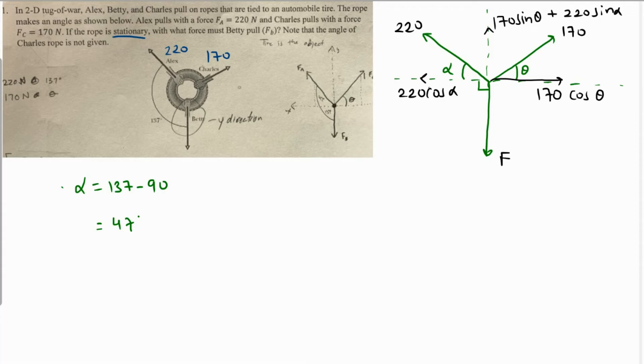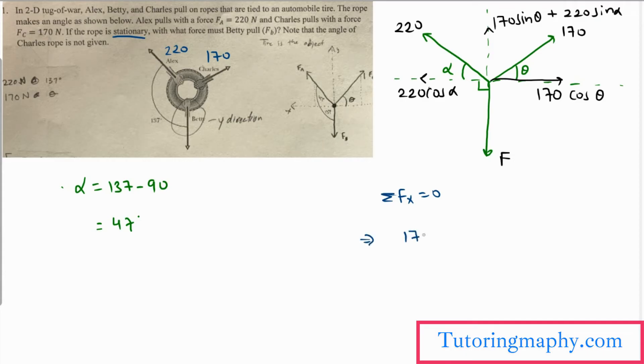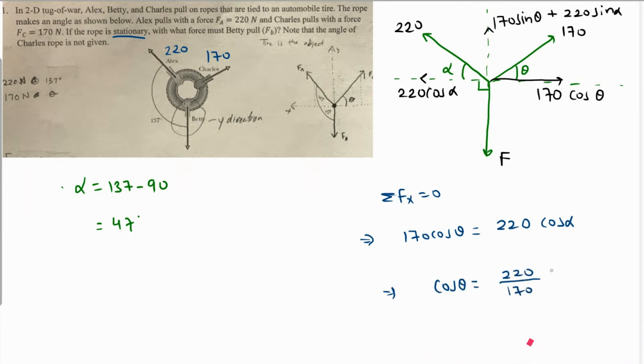Since this is an equilibrium, the horizontal and vertical total forces should be zero. Summation of Fx should be zero, net force towards the x direction is zero, which means that 170 cosine of theta should be 220 cosine of alpha. If we divide both sides by 170, cosine of theta will be 220 over 170 times cos of alpha, where alpha is 47 degrees.